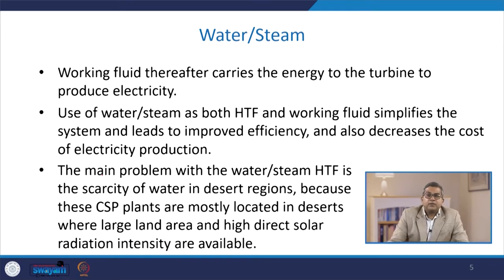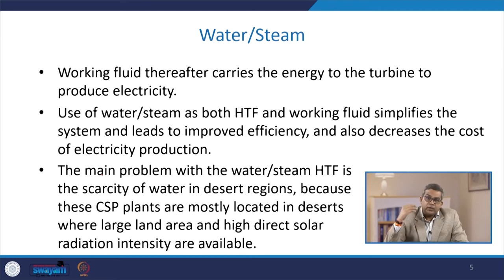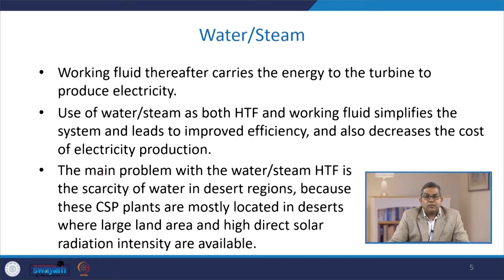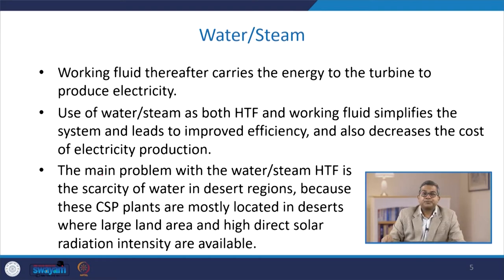The thermal energy is then transferred to the working fluid, usually water or steam. The working fluid thereafter carries this energy to the turbine to produce electricity. Use of water or steam as both heat transfer fluid and working fluid simplifies the system, leading to improved efficiency and decreased cost of electricity production. The main problem with water-steam as an HTF is the scarcity of water in desert regions, where concentrated solar power plants are mostly located due to abundant land area and high direct solar radiation intensity.